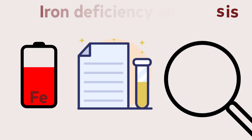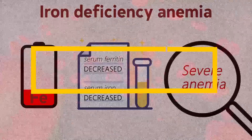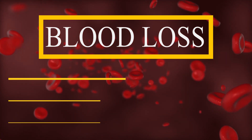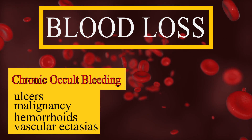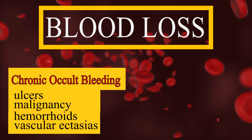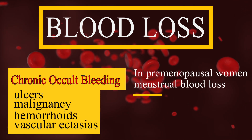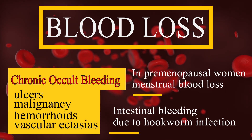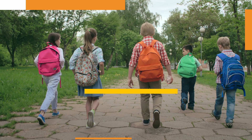Blood loss is the major cause of iron deficiency in men and postmenopausal women. The most frequent cause is chronic occult bleeding, usually from the gastrointestinal tract due to ulcers, malignancy, hemorrhoids, or vascular ectasias. In premenopausal women, cumulative menstrual blood loss is a common cause. Intestinal bleeding due to hookworm infection is a common cause in developing countries.